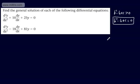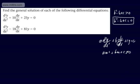When we have a differential equation in the form a(d²y/dx²) + b(dy/dx) + cy = 0, the auxiliary equation is given as am² + bm + c = 0.